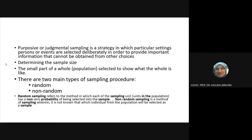Purposive or judgmental sampling is a strategy in which particular settings, persons, or events are selected deliberately in order to provide important information for the research purpose. This is when you purposely judge that certain people can answer something.